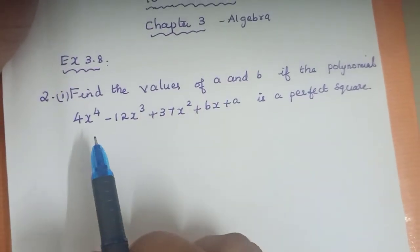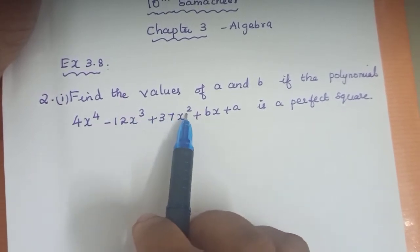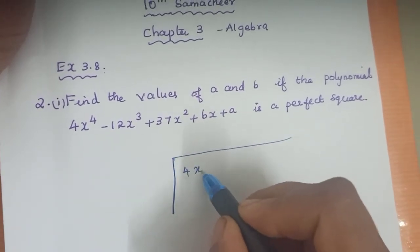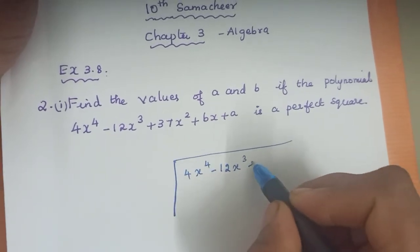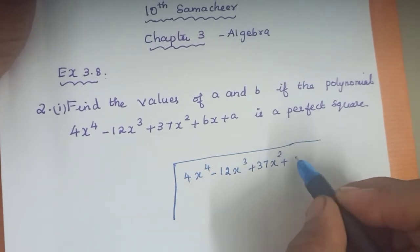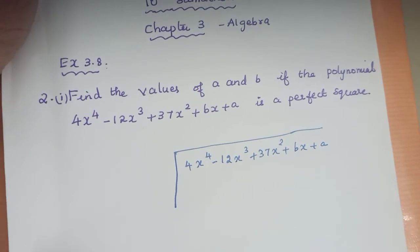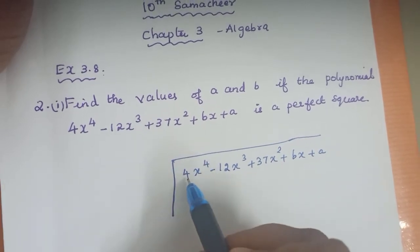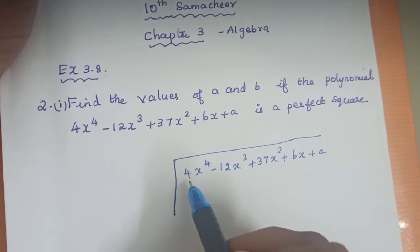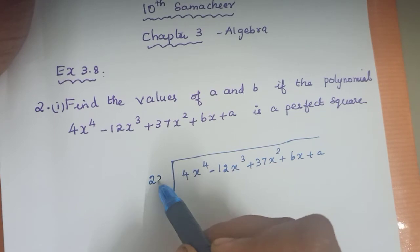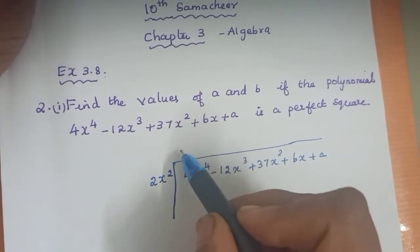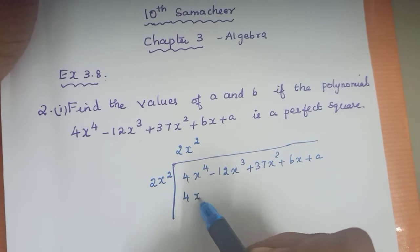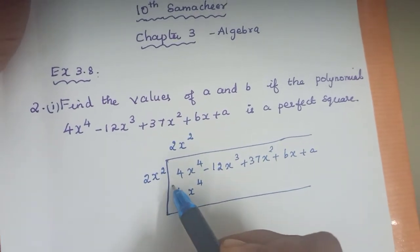When you equate the remainder to 0, how will you find the values of a and b? Same square root method only. I am going to first check the polynomial, whether it is in correct order: degree 4, 3, 2, 1, 0. Correct. So I am going to put it in the division.